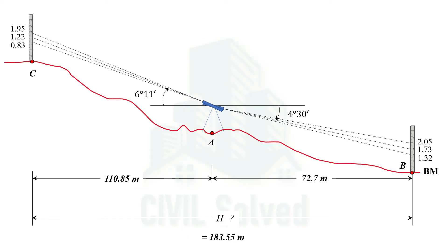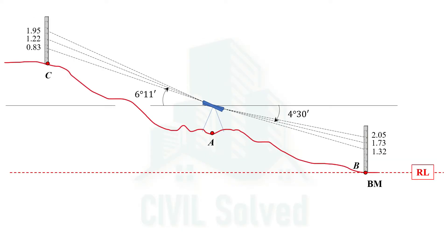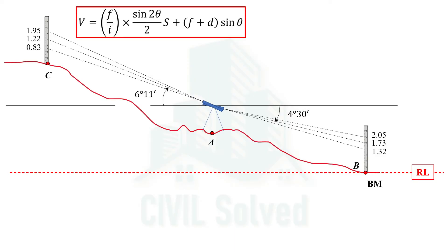The next thing being asked is the reduced level of point C. The reduced level at the benchmark is given. We will use the vertical distance formula from case number 2 of the Stadia method. The V distance is the distance from the axis of the instrument to the central Stadia reading — V1 for the first setup and V2 for the second setup. The central Stadia readings are represented as h1 and h2 for the two setups respectively.